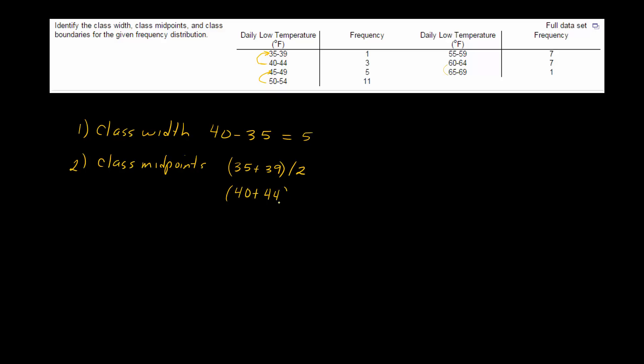40 plus 44 divided by 2, 45 plus 49 divided by 2, 50 plus 54 divided by 2, 55 plus 59 divided by 2, 60 plus 64 divided by 2, and then finally 65 plus 69 divided by 2. So all I'm doing is finding that midpoint by adding the low value and the high value, and then after I add it, I divide by 2.